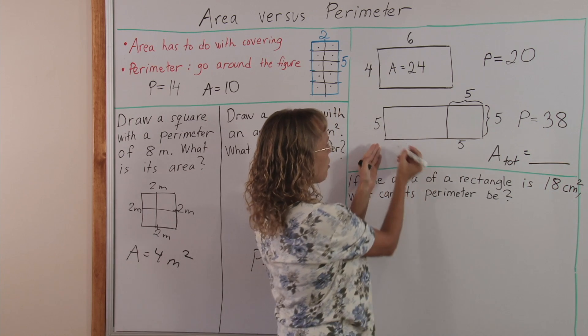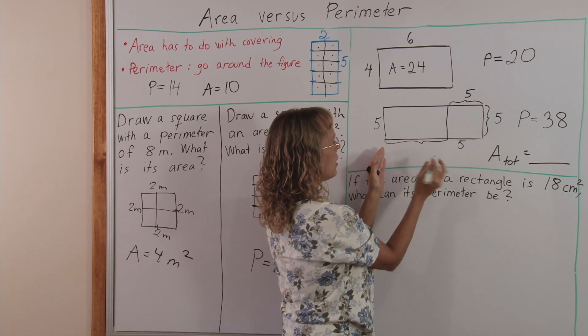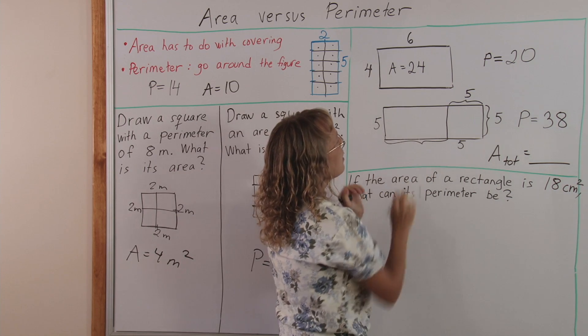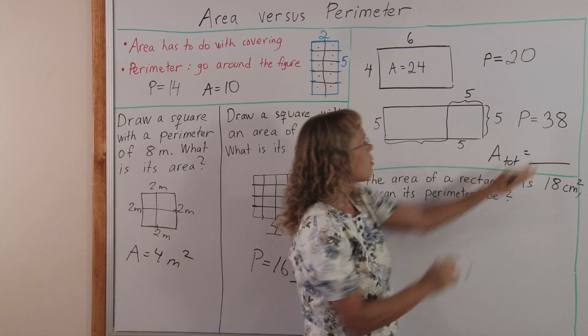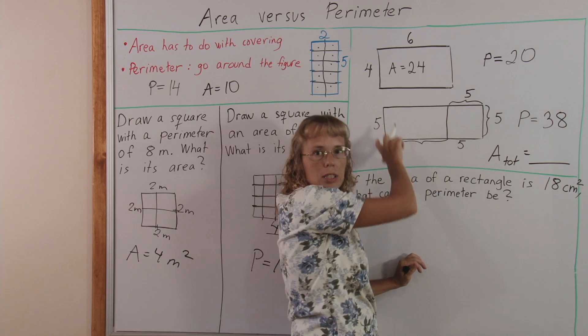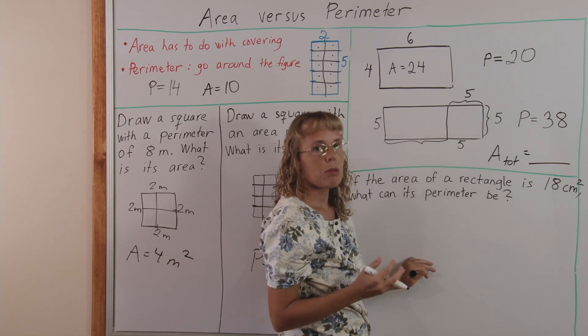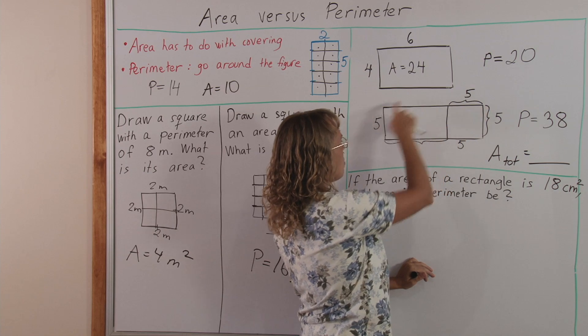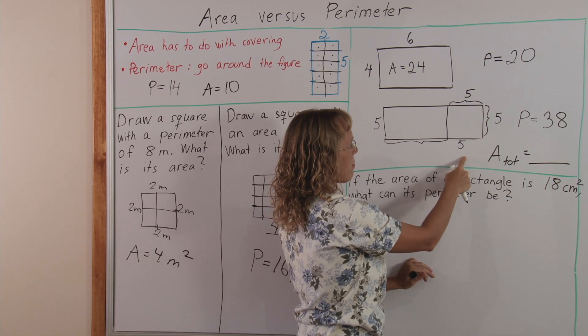So the only unknown side here is actually this one, and we know the perimeter, so we know how much is the total distance all the way around, and that's what we can use now. Here's five, five, unknown, five, unknown, five. Okay?